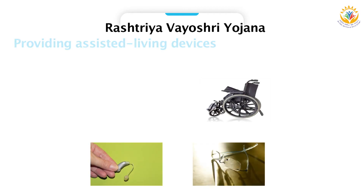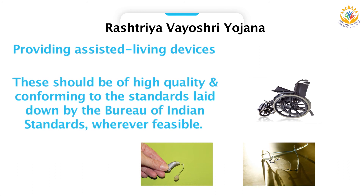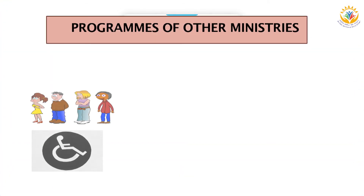Then there is the Rashtriya Vayoshri Yojana. The scheme aims at providing senior citizens belonging to the below poverty line category who suffer from age-related disabilities or infirmities — such as low vision, hearing impairment, loss of teeth, or locomotion disability — with assisted living devices that can restore near-normalcy in bodily functioning. The assistive devices shall be of high quality, conforming to standards laid down by the Bureau of Indian Standards wherever feasible.